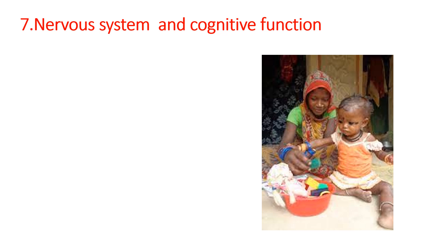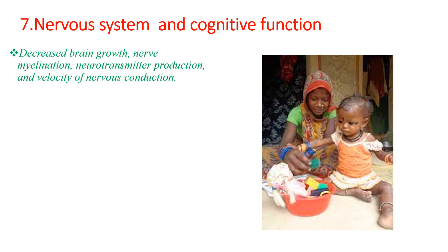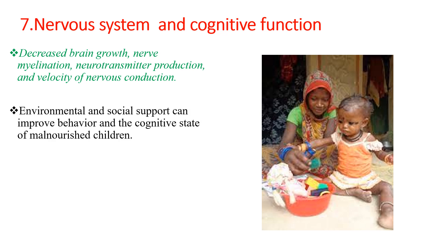When we come to nervous system and cognitive function in severe acute malnutrition, there is decreased brain growth, nerve myelination, decreased neurotransmitter production, and reduced velocity of nerve conduction. This overall affects the cognition of the child. Environmental and social support can improve behavior and the cognitive state of malnourished children.